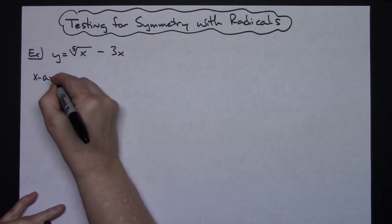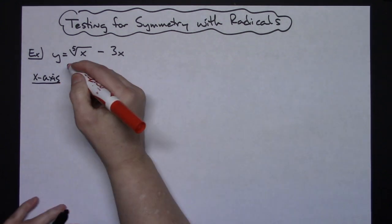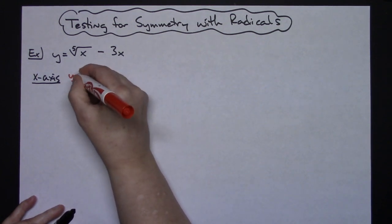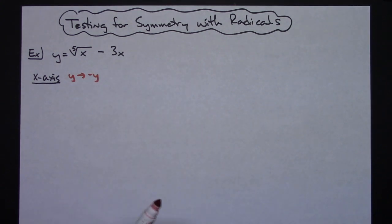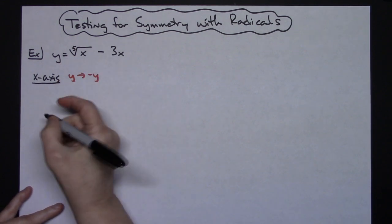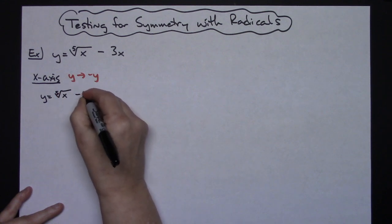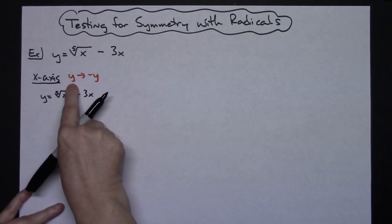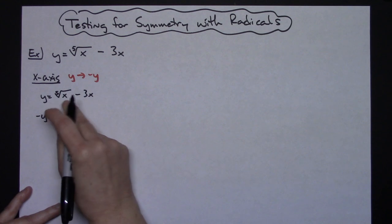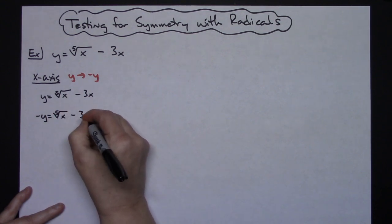First, let's start with the x-axis. To test for symmetry around the x-axis, you want to take every y in your equation and replace it with a negative y — that's your rule. So I'll write the original function: y equals the fifth root of x minus 3x. Now I replace every y with negative y, giving us: negative y equals the fifth root of x minus 3x. Everything else stays the same.